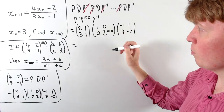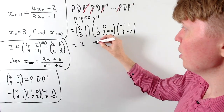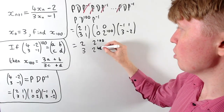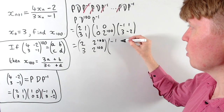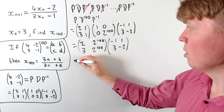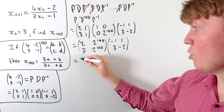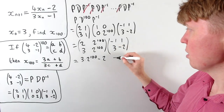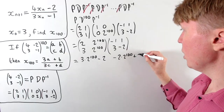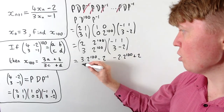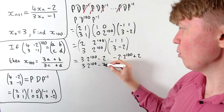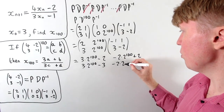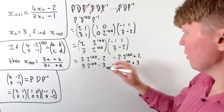Multiplying [2, 2¹⁰⁰; 3, 2¹⁰⁰] by P⁻¹ = [−1, 1; 3, −2], we get: top left = 3·2¹⁰⁰ − 2, top right = −2·2¹⁰⁰ + 2, bottom left = 3·2¹⁰⁰ − 3, bottom right = −2·2¹⁰⁰ + 3. This is our final matrix A¹⁰⁰ with entries a, b, c, d.